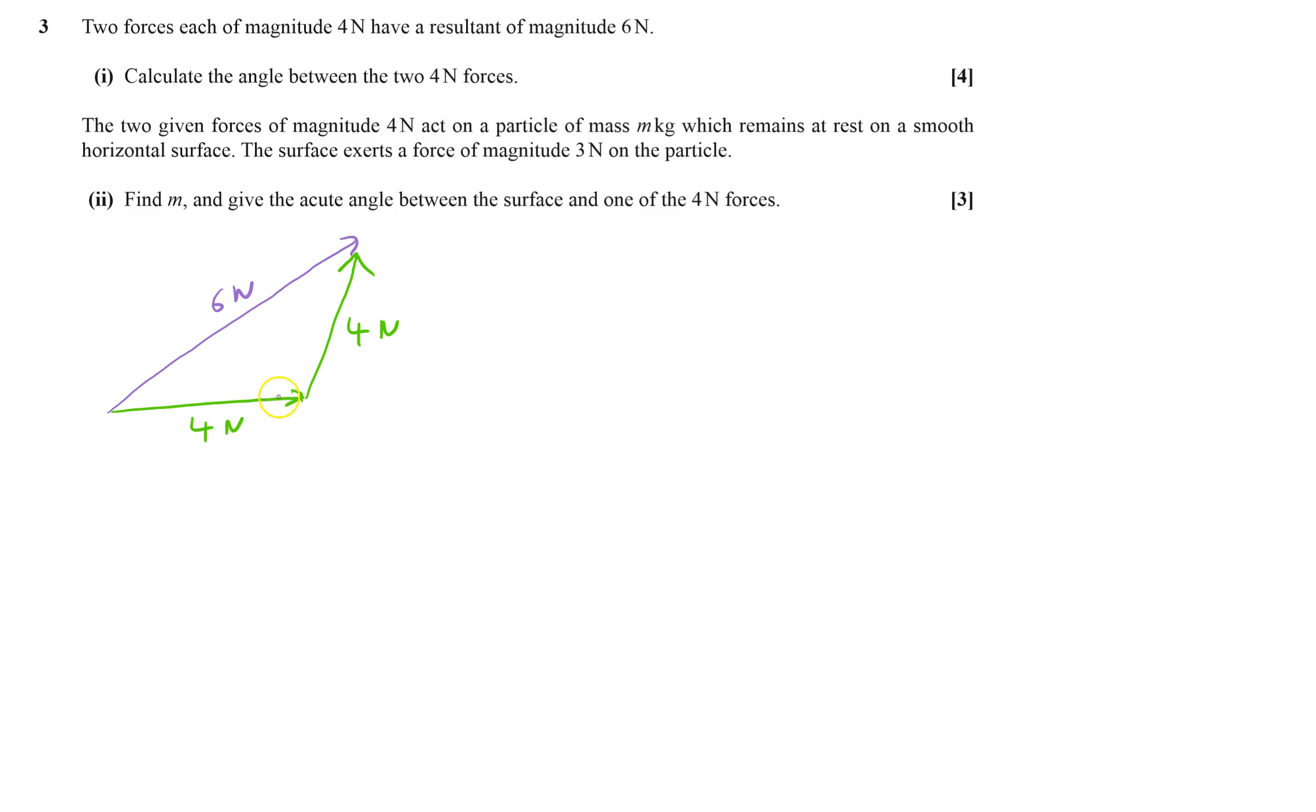So obviously I need to work out this angle here. Well actually, you'll see later on I actually want to work out a different angle, but I'm going to work out that angle first. Obviously going to be cosine rule, so that's going to give me six squared equals four squared plus four squared. That's a squared equals b squared plus c squared minus two bc. So minus two times by the four times by four. And then that'll be cos of theta.